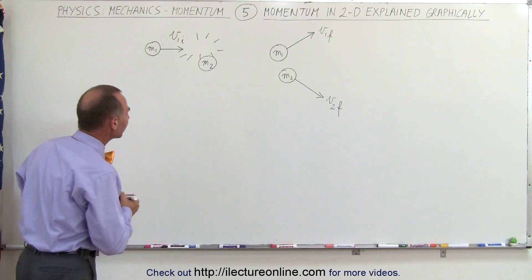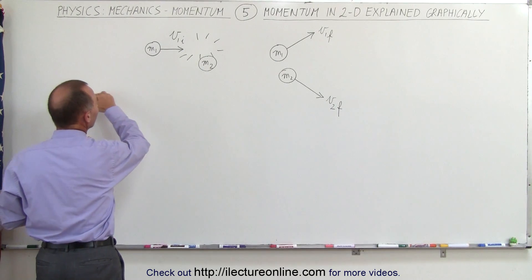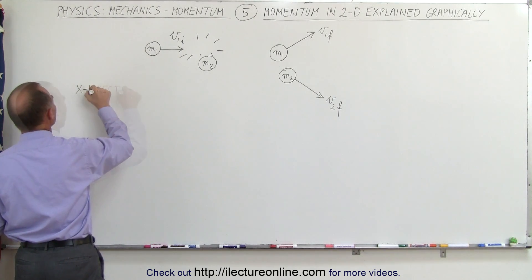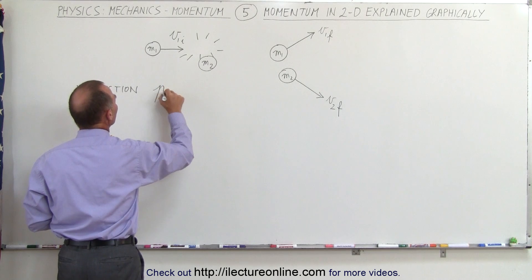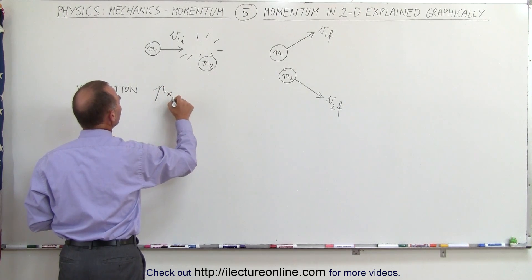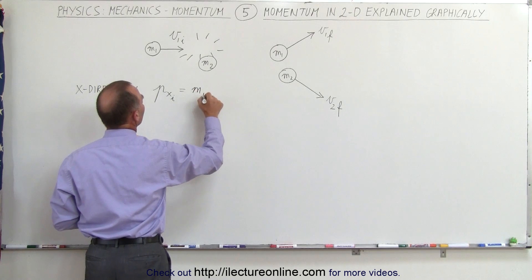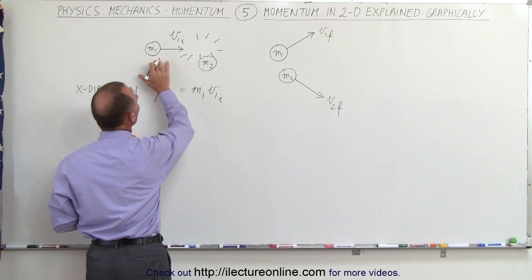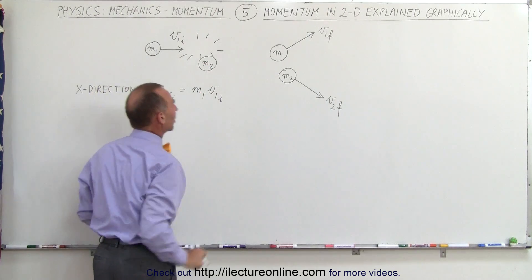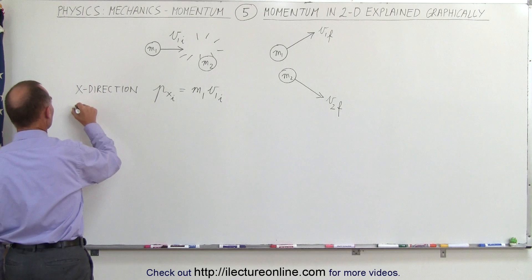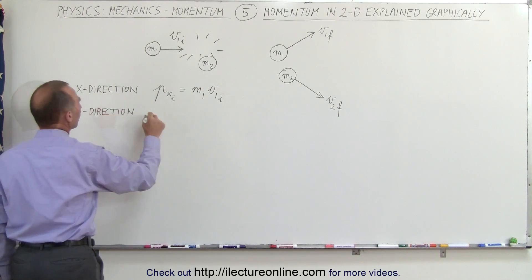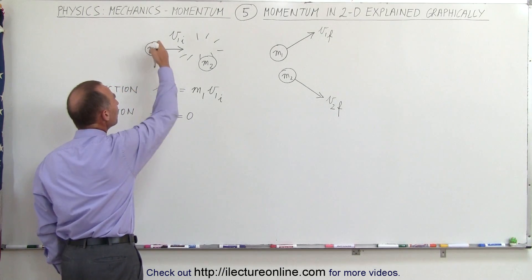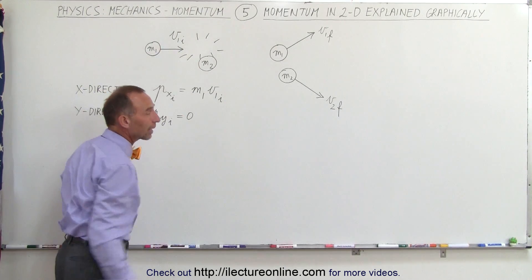How does that work? Well, let's first look at the momentum in the x-direction before the collision. We can say that the initial momentum, p in the x-direction initially, is equal to m1 times v sub 1 initially. In other words, it's all due to the motion of the one billiard ball because the second one is at rest. In the y-direction, the momentum initially must equal zero because there's no component of the velocity in the y-direction — it's only in the x-direction.